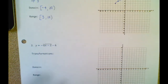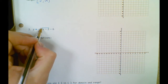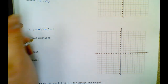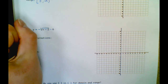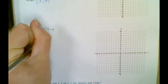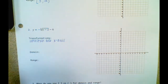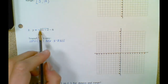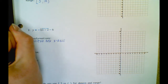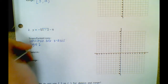Alrighty, number two. Transformations here: this is a cube root function because of this three. This minus sign out in front means reflection over the x-axis. Make sure you guys state that — it's a reflection over the x-axis. This would be right two, and this is down six — it's outside of the radical.